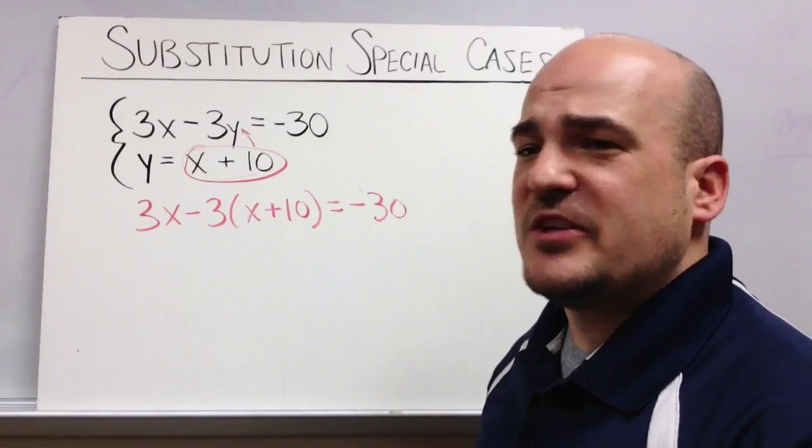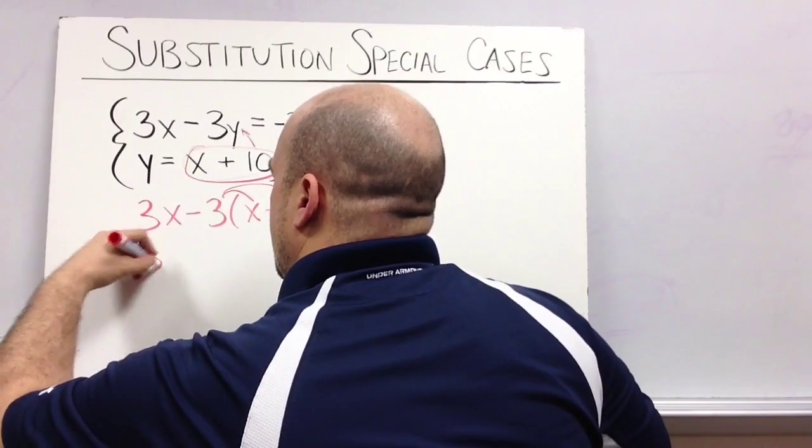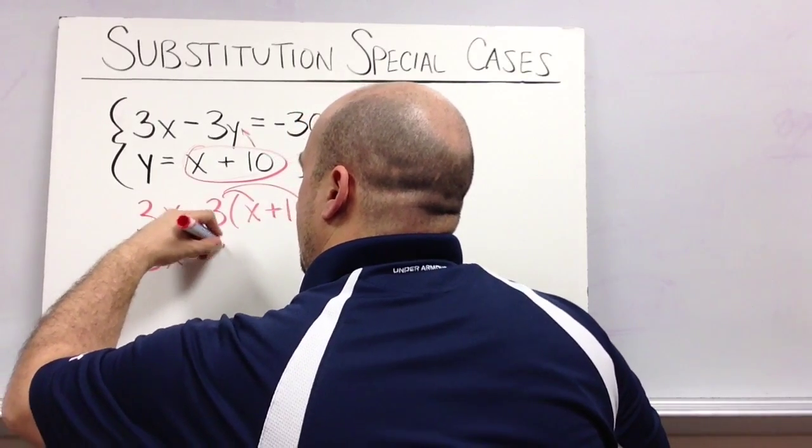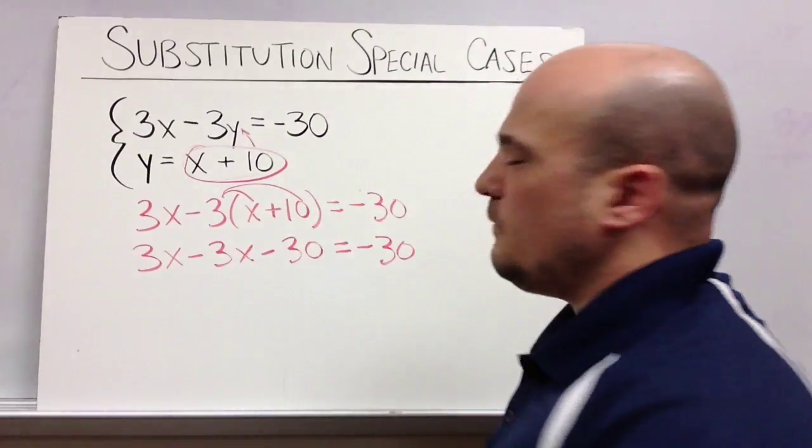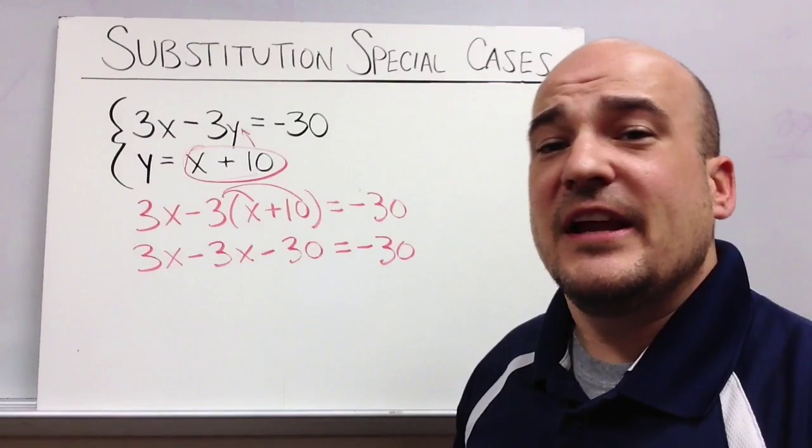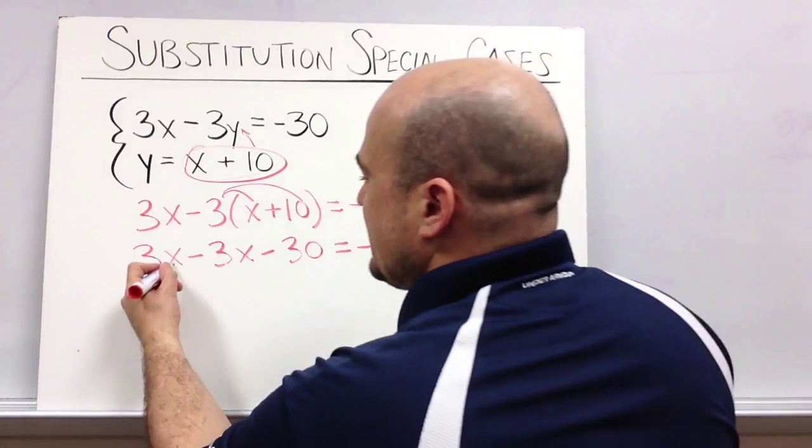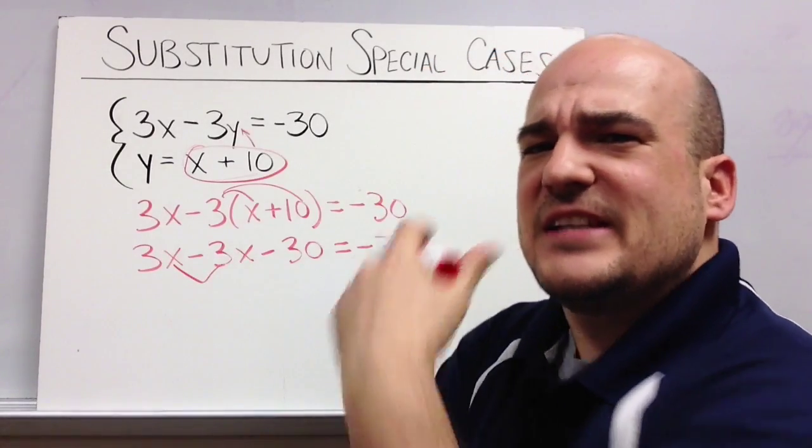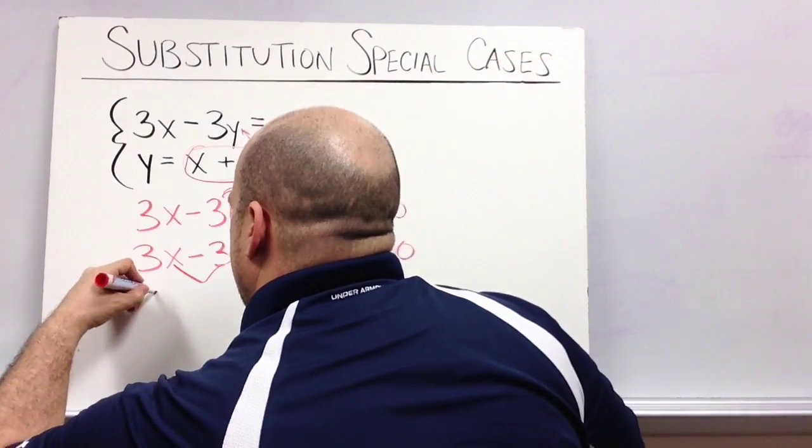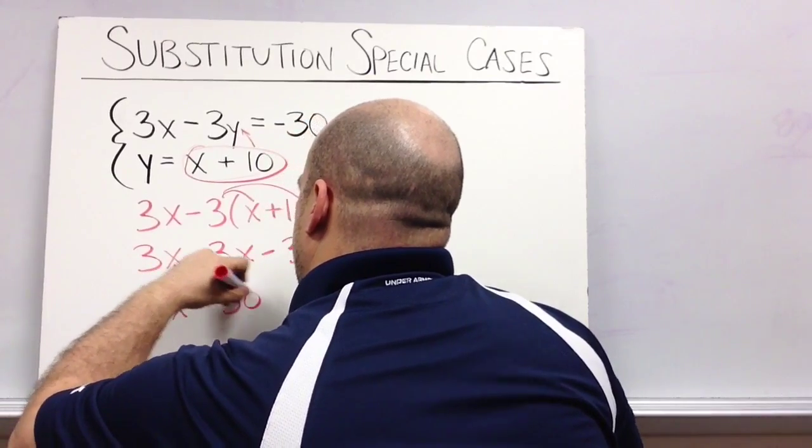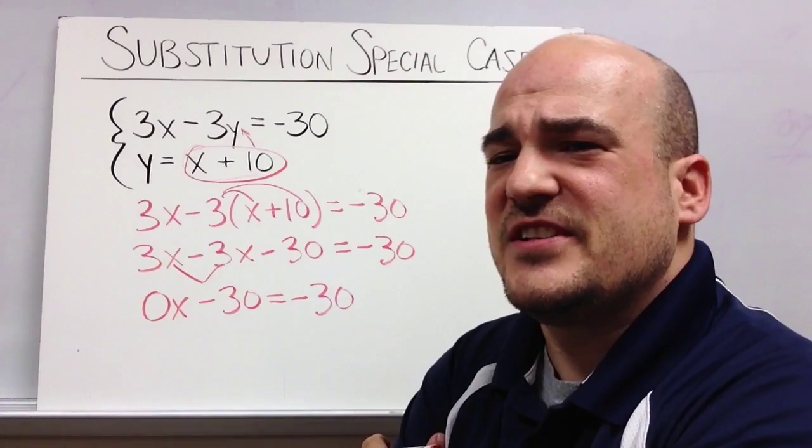Once I rewrite the equation, I use my algebra and distribute this negative 3. Once I distribute that negative 3, now I'm going to look to add like terms. Looks like I've got x's over here, a 3x and a minus 3x, and when you do 3x and take away 3x you end up with 0x, and this is where we get into an interesting situation.